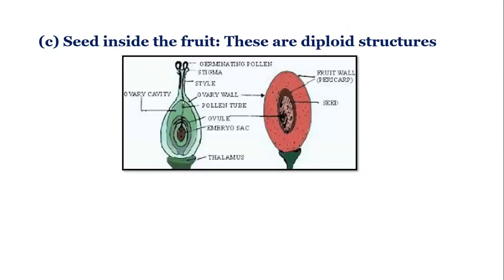Next, the development of seed inside fruits. Seeds are formed as a result of fertilization. Pollen nuclei fuse with the egg to initiate seed formation. In angiosperms, the second pollen nucleus fuses with the polar nuclei in the ovary to form the endosperm.